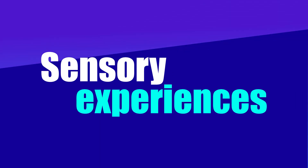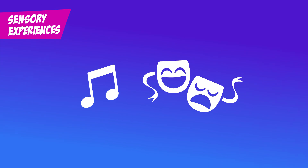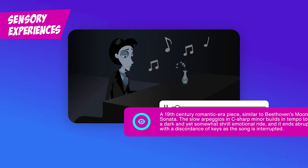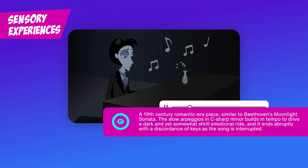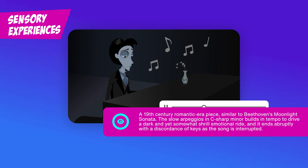Sensory experiences. A cello solo, a work of art — these are sensory experiences that should be described with text. For example, you might describe Victor's piano solo from the movie Corpse Bride as a 19th century romantic era piece, similar to Beethoven's Moonlight Sonata. The slow arpeggios in C-sharp minor build in tempo to drive a dark and yet somewhat shrill emotional ride, and it ends abruptly with a discordance of keys as the song is interrupted.